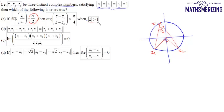We take any point Z with mod Z greater than one, meaning any point outside this circle. In that case, this angle should be less than π/4 — as Z increases, the angle decreases. So this angle is less than π/4 and not greater than π/4. That means option A is incorrect.